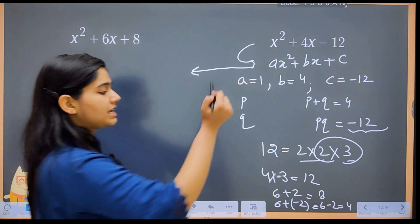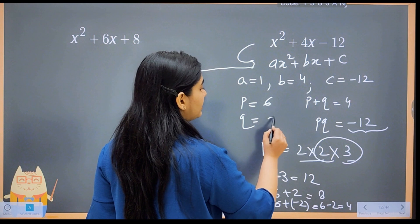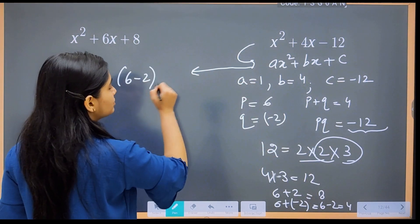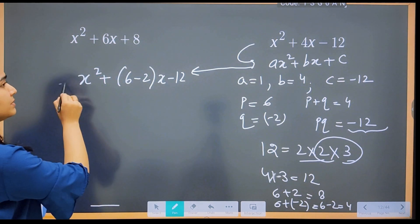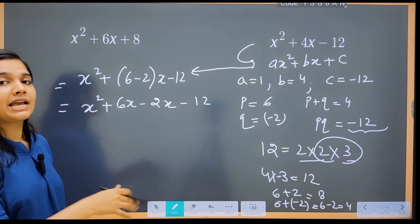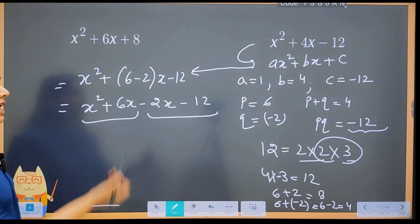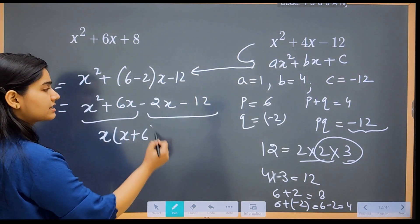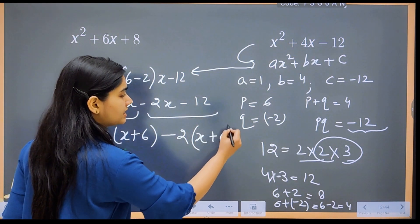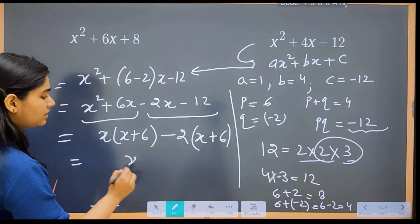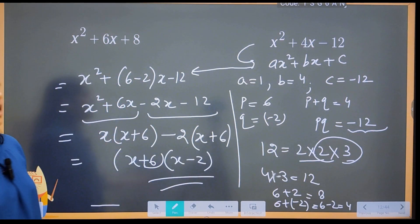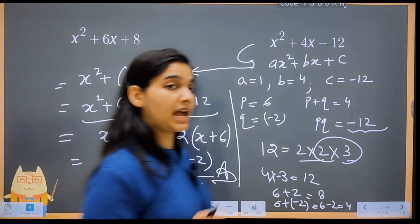Now replacing b with p + q: x² + (6 − 2)x − 12 = x² + 6x − 2x − 12. Grouping: x(x + 6) − 2(x + 6). Taking (x + 6) common: (x + 6)(x − 2). So x² + 4x − 12 = (x + 6)(x − 2).